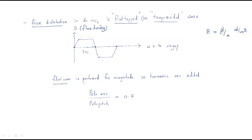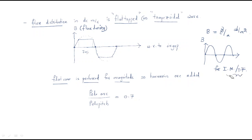This flat curve is preferred for magnitude. In machines like induction motors and transformers, the flux density is generally a sinusoidal waveform. But in case of DC machines, it is a flat-top wave. The reason is that the flat curve is preferred for magnitude so that harmonics are reduced. In order to reduce harmonics, we prefer this flat waveform.